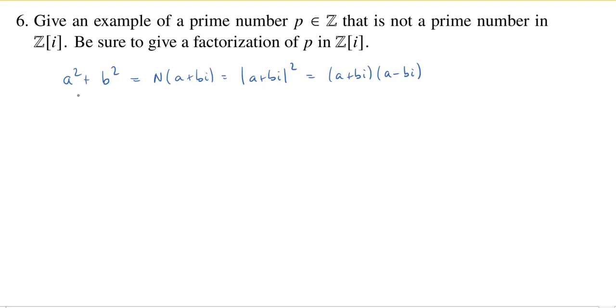Well, sort of the easiest one I can think of is 5. So 5 is 1² + 2². And so we can write this as (1 + 2i)(1 - 2i).